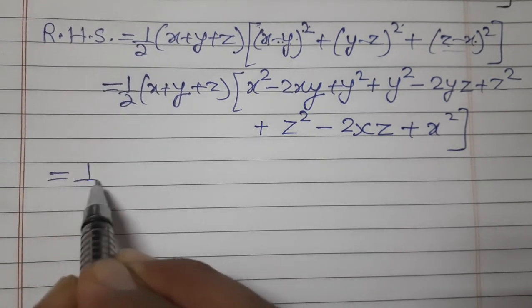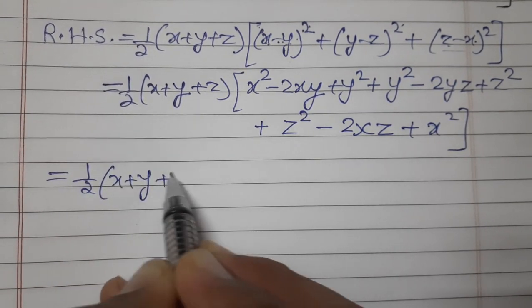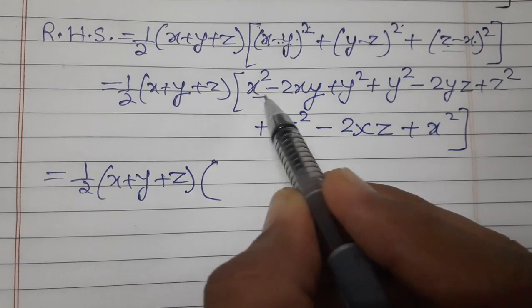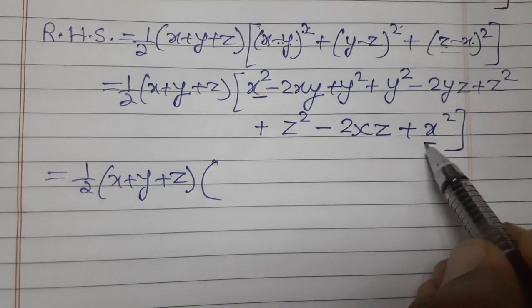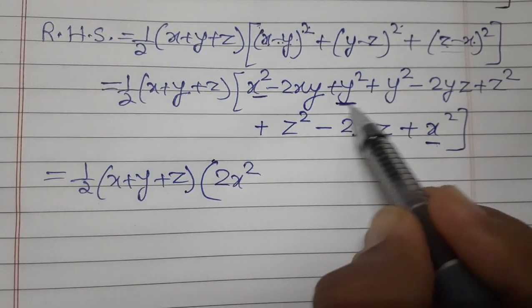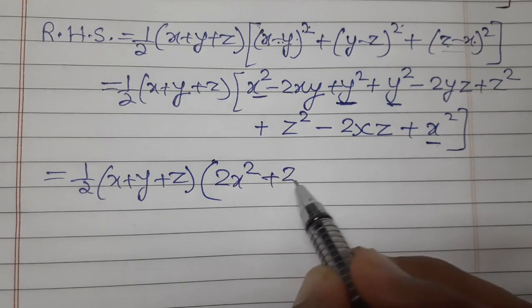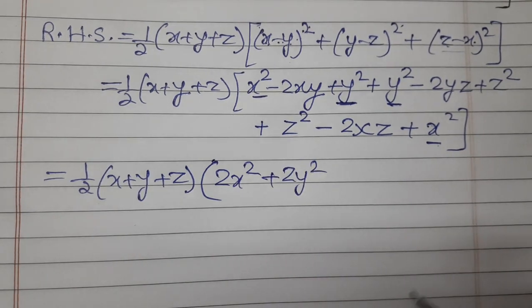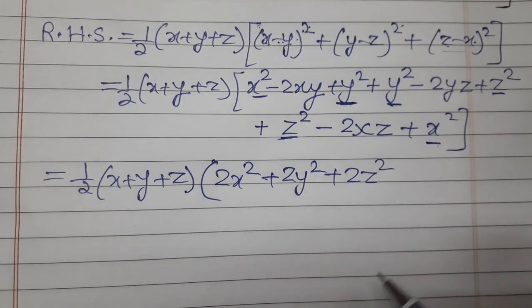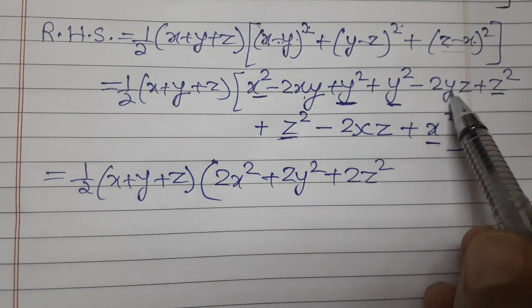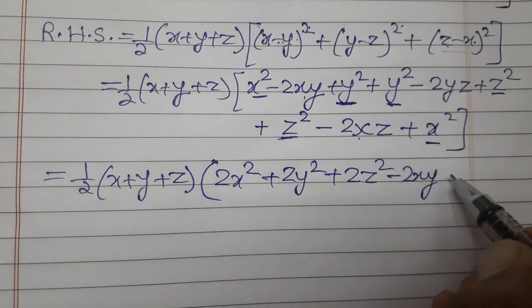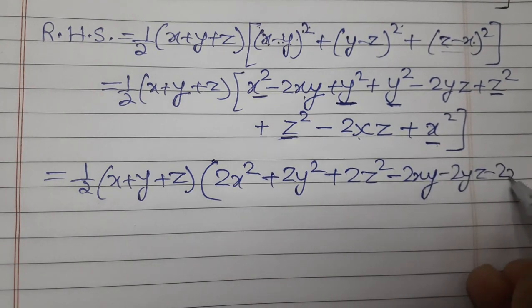The (x + y + z) term remains as it is with the half. Now collect all like terms: x² + x² = 2x², y² + y² = 2y², z² + z² = 2z², and what remains is -2xy - 2yz - 2xz.